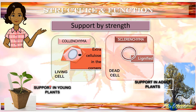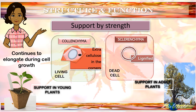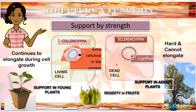The reason for this is because since collenchyma is a living cell, it can continue to elongate during cell growth. However, the sclerenchyma is dead, so it is unable to elongate and is suited for an adult plant that has stopped the elongation process. Besides that, the sclerenchyma also provides rigidity in fruits.